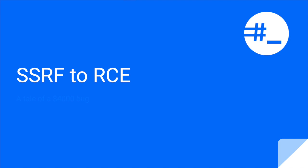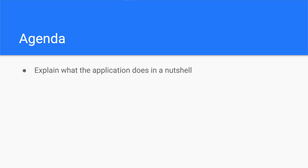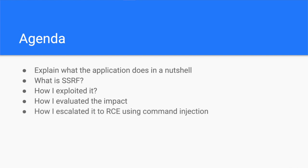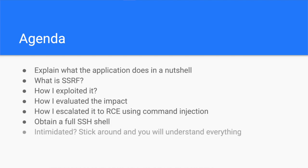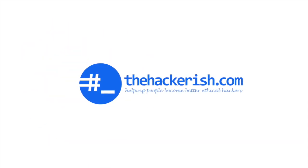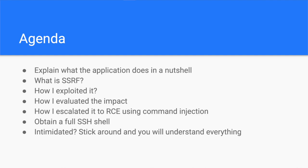From a server-side request forgery to $4,000. Hello ethical hackers and bug bounty hunters, welcome to this new episode where I show you how I found a server-side request forgery, then explain how I was able to escalate it to obtain a remote code execution, and finally how it is possible to gain a full SSH shell on the vulnerable server. Just make sure you stick around with me until the end — I promise you're going to learn so many things today.